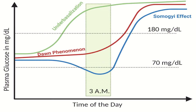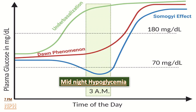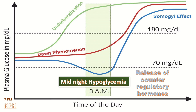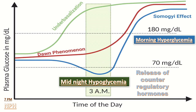Let me explain the Somogyi effect graphically. Suppose at 7 PM a high dose of NPH is administered — the insulin spike will come at around 3 AM, which will cause midnight hypoglycemia. Due to this hypoglycemia, there is release of counter-regulatory hormones, which in turn causes morning hyperglycemia. This whole phenomenon is called the Somogyi effect.